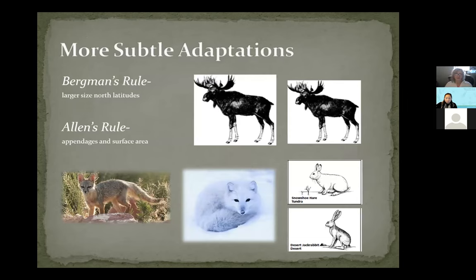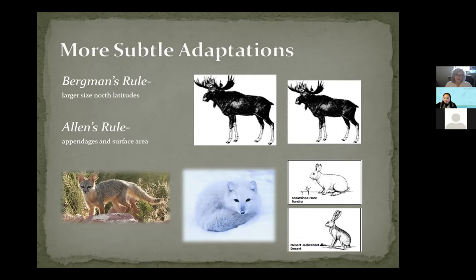There are a couple of rules about things that help you adapt to survive in the wintertime. One is Bergmann's rule — our moose are much larger than moose in northern Minnesota or Maine. The bigger you are, the more likely you are to survive. Allen's rule says appendages and surface area make a big difference. You can see a desert fox with big ears, whereas our arctic fox has very short ears close to its body to help it retain heat during colder times. We're going to talk about the snowshoe hare and jackrabbit ear difference shortly.